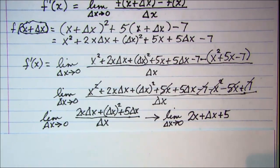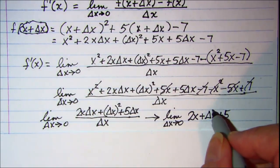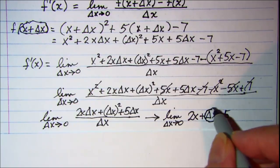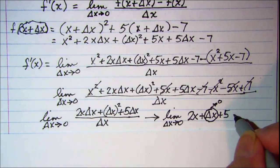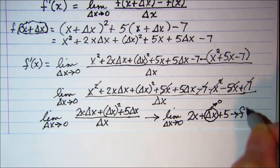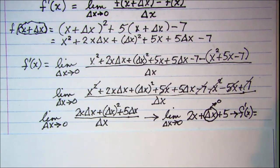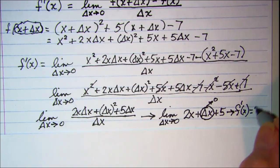Now when I take the limit as delta x approaches 0, the delta x term becomes 0, and so I get f prime of x equal to 2x plus 5.